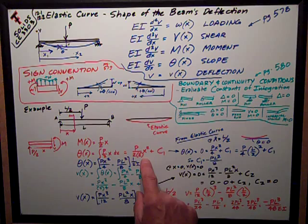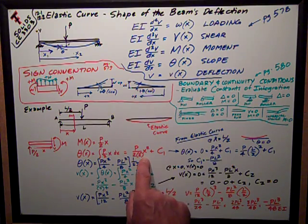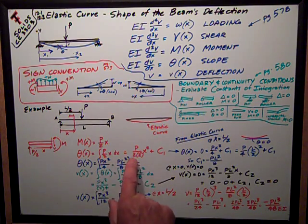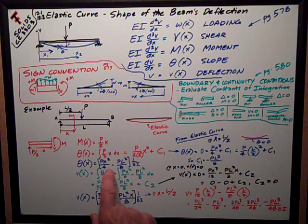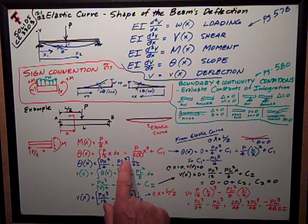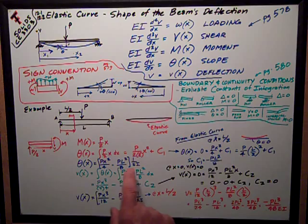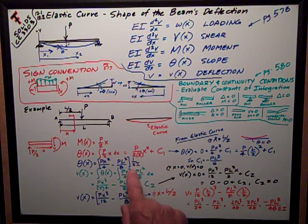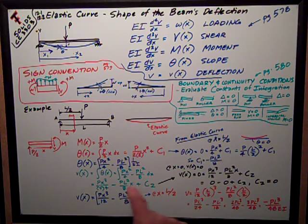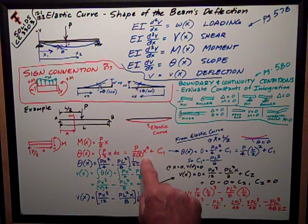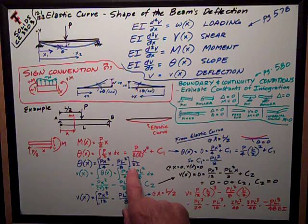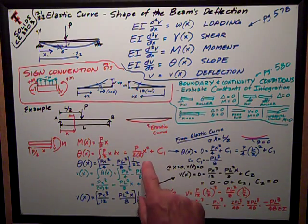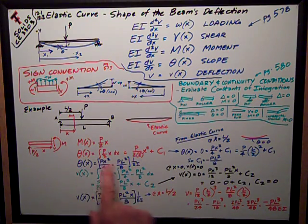So now I can write my equation, and my equation is PX squared over 4 minus my constant, which is PL squared over 8. I've kind of simplified everything by dropping out the 1 over EI. And that's assuming, which is 99.9% of the case, where EI is constant over the length of the beam. So that's my equation for slope.